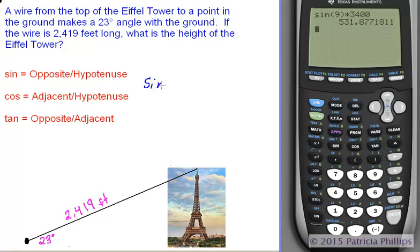Write down sine of 23 degrees equals our unknown height of x over 2,419. We're going to isolate that x by multiplying both sides by 2,419. It will cancel out on the right side, leaving only x. On the left-hand side, I'm going to rewrite this as sine of 23 degrees times 2,419.